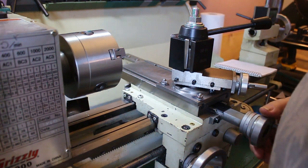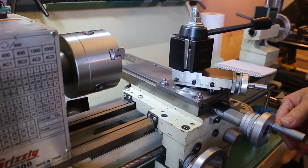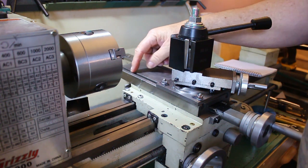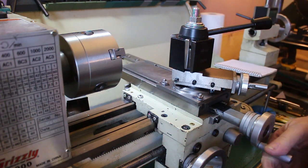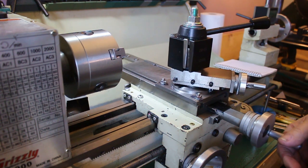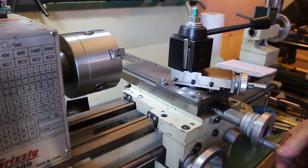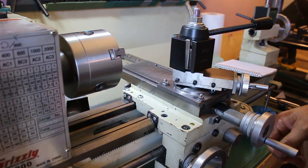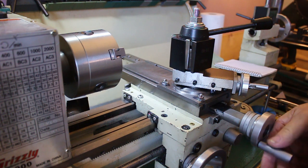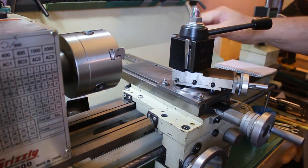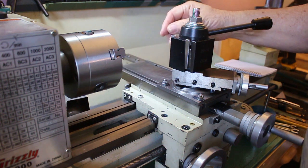Okay, so this is my Grizzly G4000 lathe and you see it's got the slides in it like a lot of the Encos. So when you're cutting threads you go to zero if you remember how many times you turned it. The plan is to make a zero stop for the top slide. So we got these two holes here we're going to use.